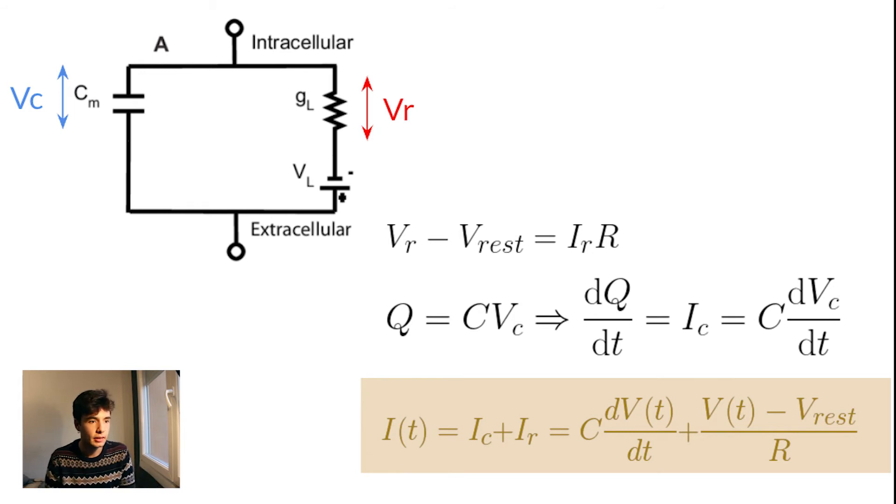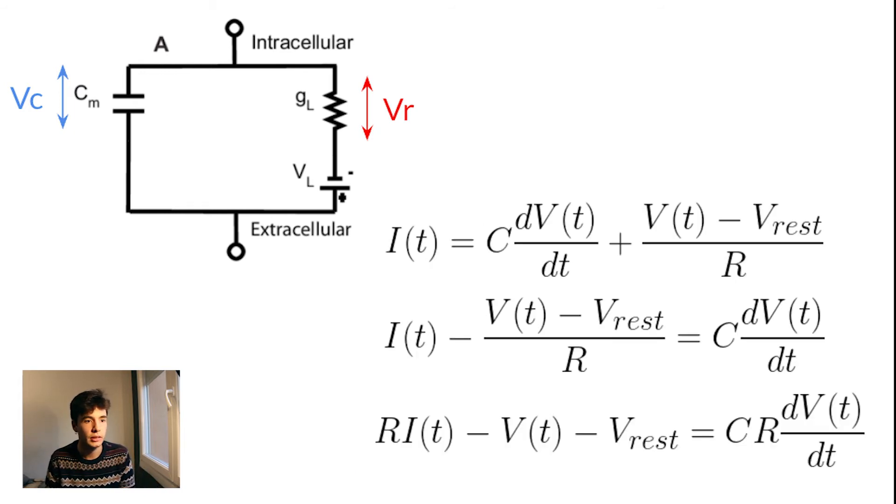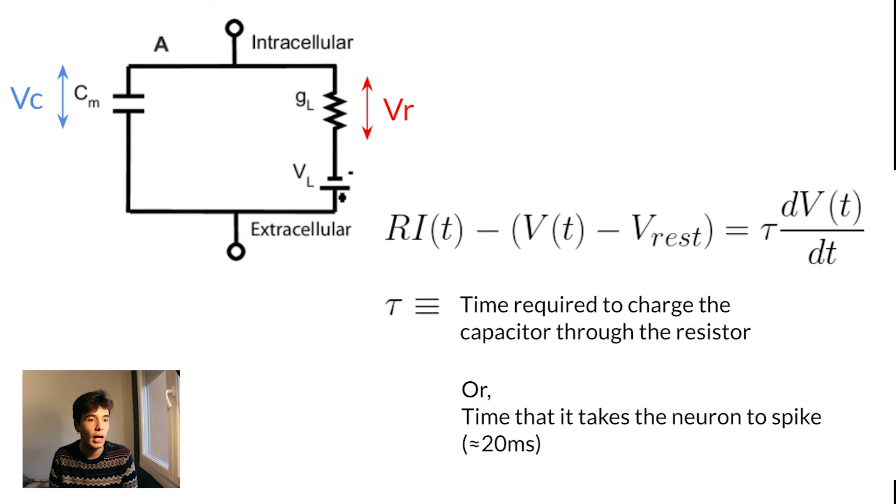Therefore, I of T is this, and of course we can rearrange this in a nice way by noticing, for example, that CR is the time that it takes the capacitor to fully charge, that is tau. And this is what we will define as the time that it takes a neuron to spike, which is around 20 milliseconds.